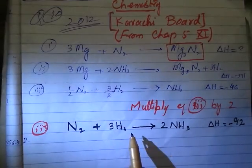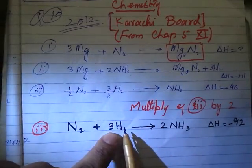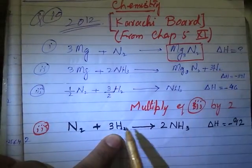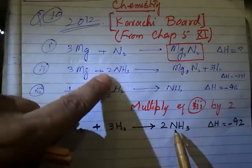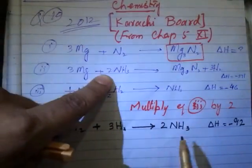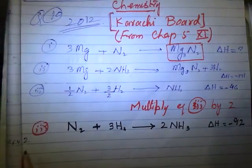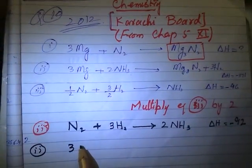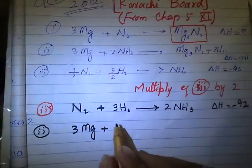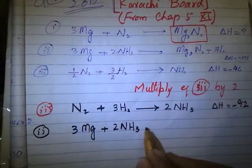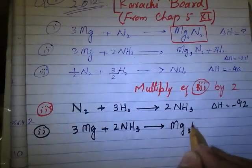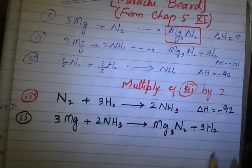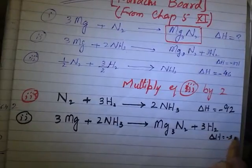Now if we add this modified equation 3 with equation 2, the 3H₂ from each side can be cancelled. Writing equation 2: 3Mg plus 2NH₃ gives Mg₃N₂ plus 3H₂, with ΔH = negative 371 kJ/mol.